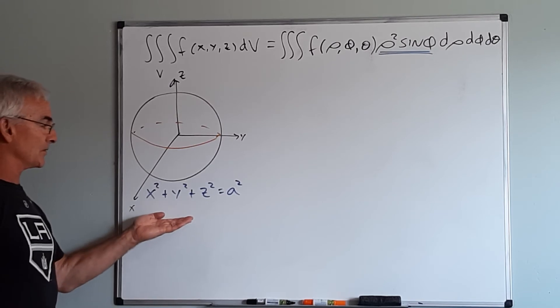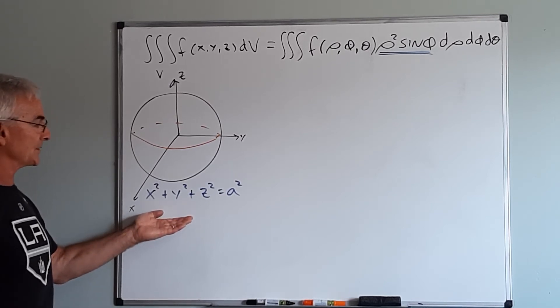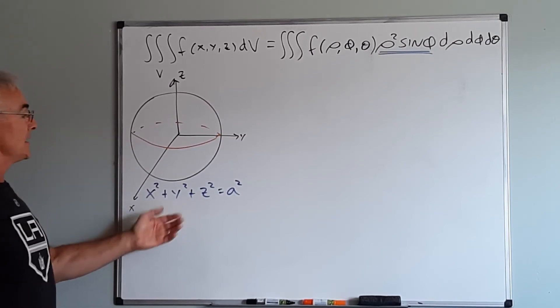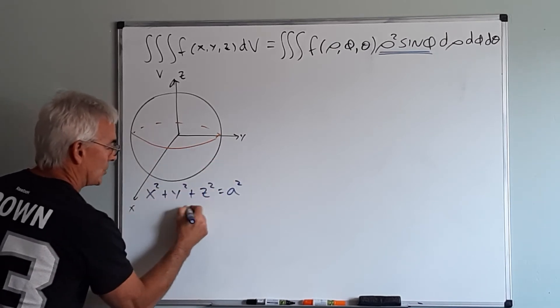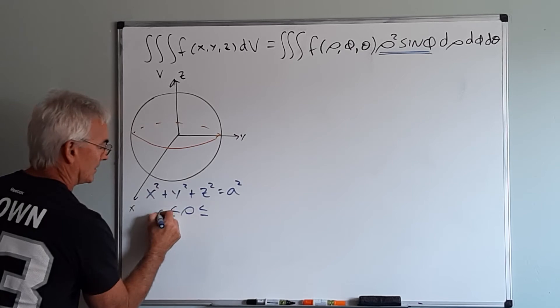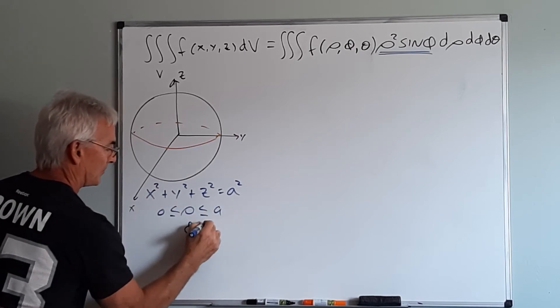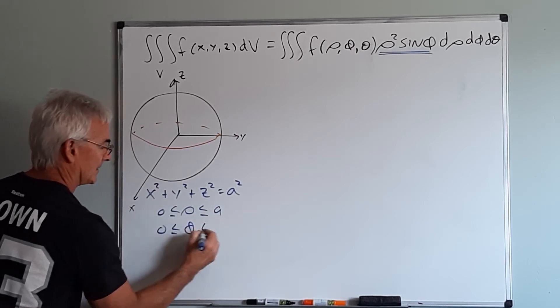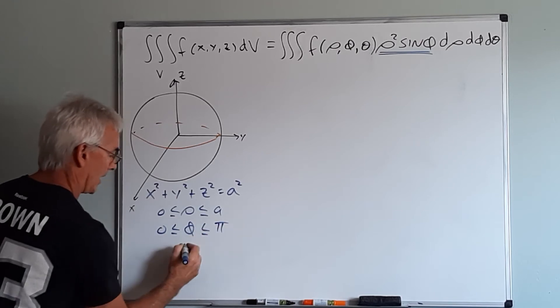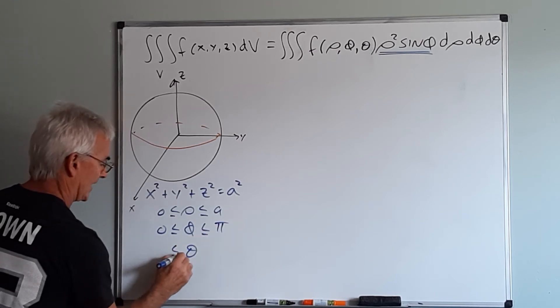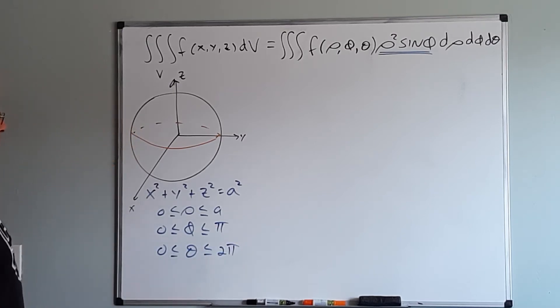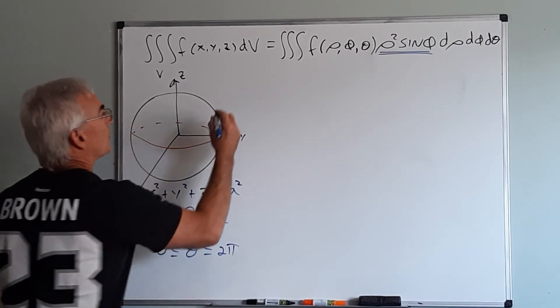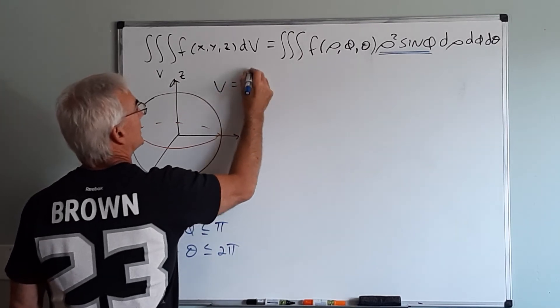Let's calculate the volume of a sphere of radius a centered at the origin. Now in this case here, since it's radius a, we know that rho will range between 0 and a, phi will range between 0 and pi, theta will range between 0 and 2 pi, because there's no restrictions. So when we set up our triple integral,